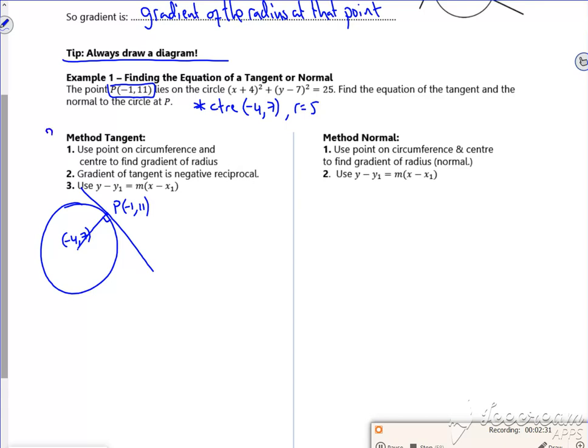I think these are done the wrong way around. The tangent is the harder one to get. You have to do the work for the normal first before changing it into the tangent. So it says use the point on the circumference and the circle, so I know my center is (-4, 7) and I know the point P is (-1, 11).